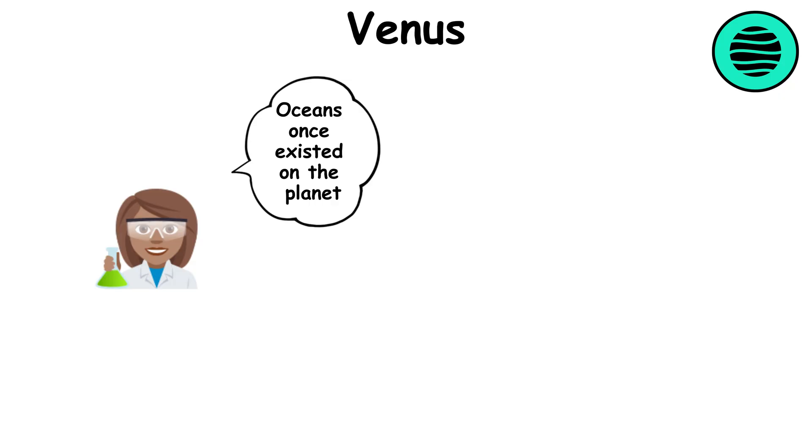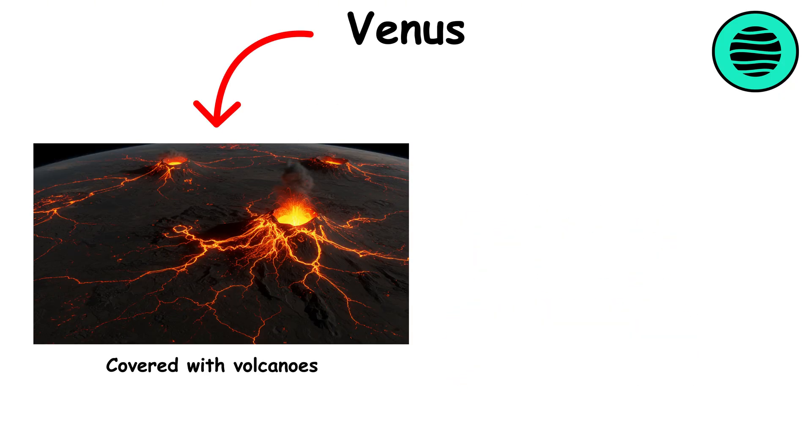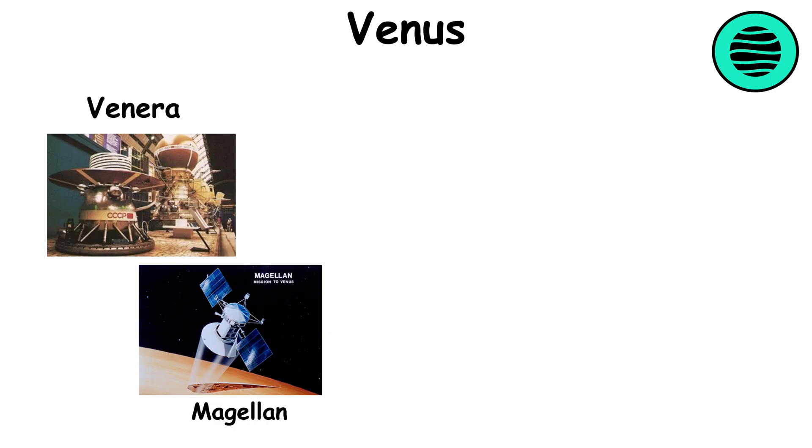Scientists speculate that oceans once existed on the planet, but they have evaporated. The surface is covered with volcanoes, making Venus one of the most active worlds. The Venera and Magellan missions helped explore this mysterious world hidden beneath thick clouds.